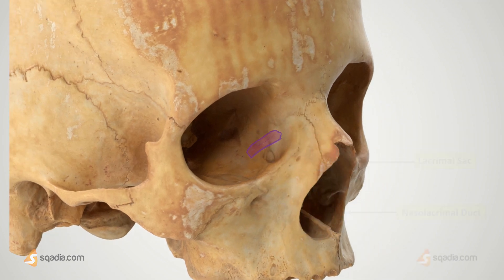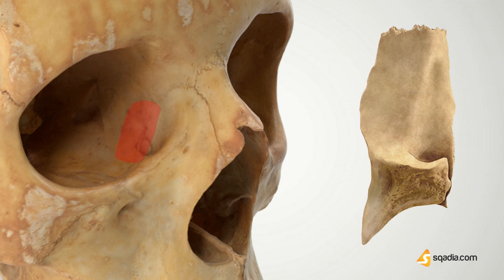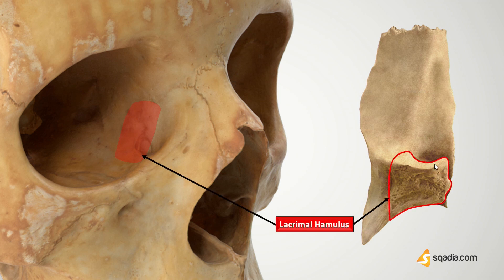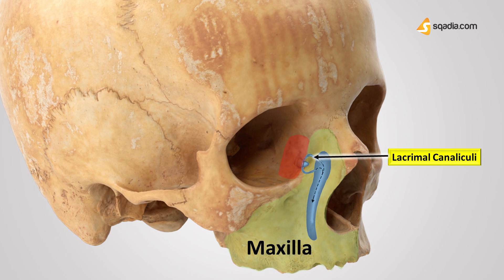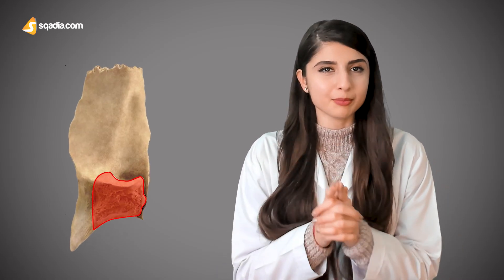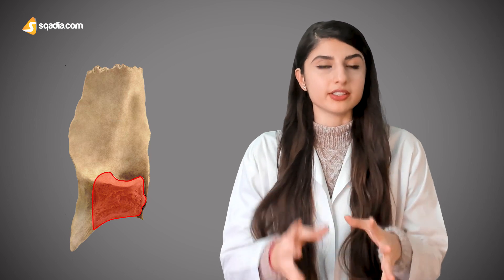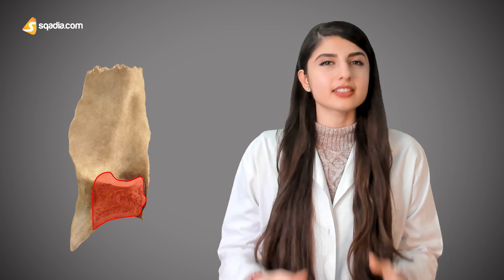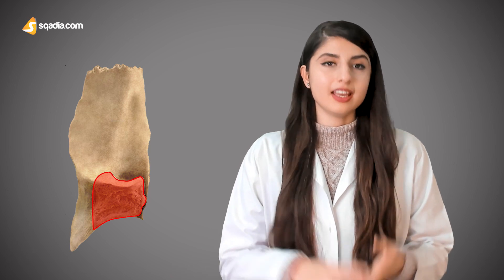On the posterior side of the lateral surface we have another important anatomical landmark shaped like a hook called the lacrimal hamulus, and it articulates with the lacrimal tubercle of the maxilla. In this way the lacrimal bone and the maxilla enclose the lacrimal canaliculus. Interestingly, the hamulus sometimes exists as a separate piece from the lacrimal bone and is referred to as the lesser lacrimal bone.